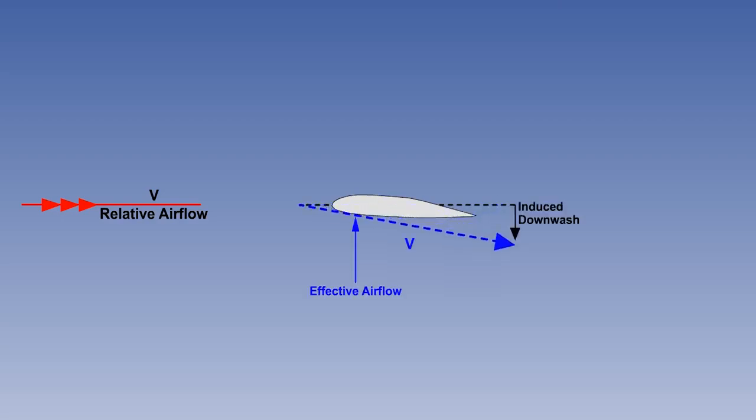It is, paradoxically, the production of the lift itself which reduces the magnitude of the lift. To replace the lift lost by the increased downwash, the aircraft must be flown at a higher angle of attack.